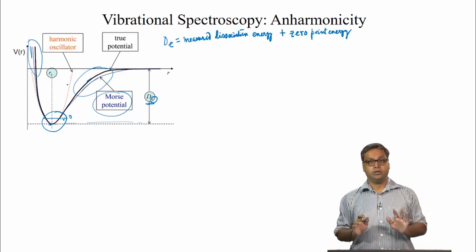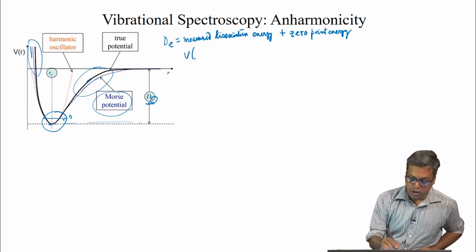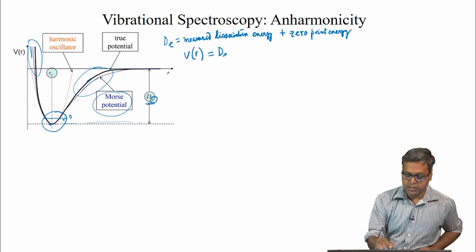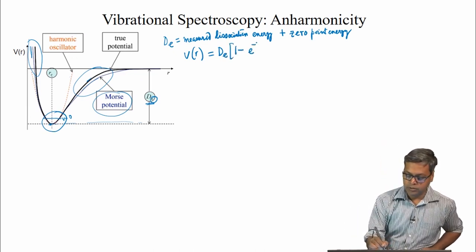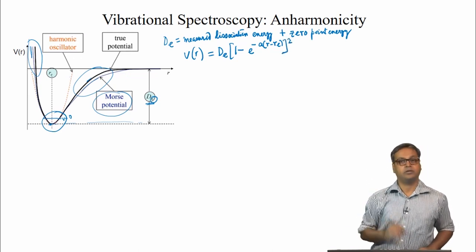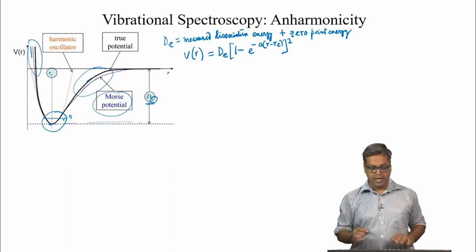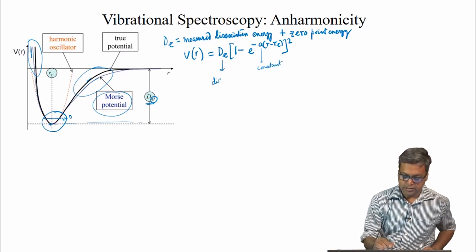The expression for the Morse potential is given by V(r) = D_E times [1 minus e to the power minus a(r minus r_equilibrium)] whole squared. Here A is a constant and D_E is the dissociation energy.